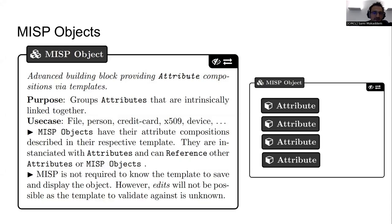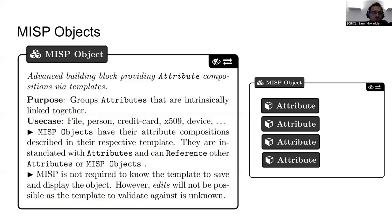This instance will be accessible for the next day, so if you want to play with it feel free — it will remain open, but the password will be changed next week. When you access and log in, you'll land on the list of events created by the different users. You can see all the clusters and taxonomy data assigned to these events, who created them, and the title of the event as a quick summary of what it's about.